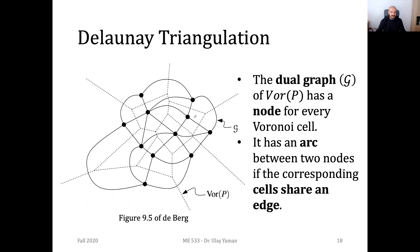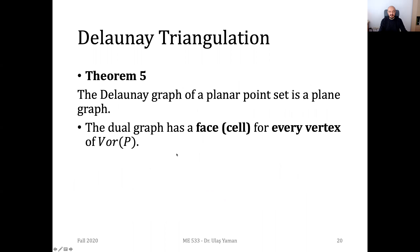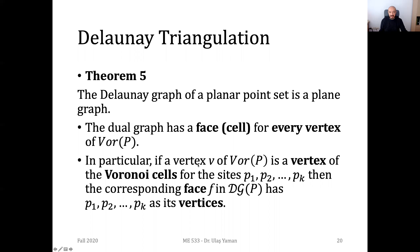For example, assume sites I, J, and K. If a Voronoi vertex is at the intersection of Voronoi cells I, J, and K, then the theorem states we should have a cell in the triangulation between those three Voronoi sites. So if a vertex V of the Voronoi diagram is a vertex of the Voronoi cells for sites I, J, K, then the corresponding triangle has those sites as its corners.